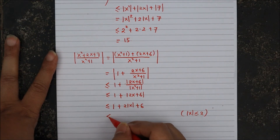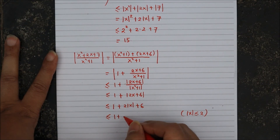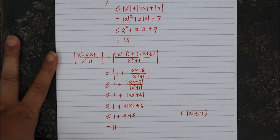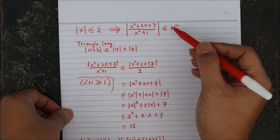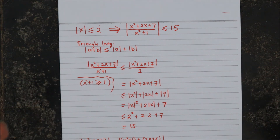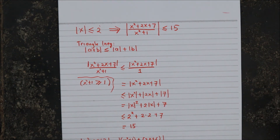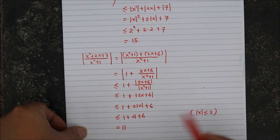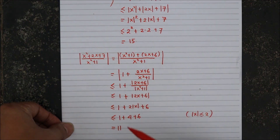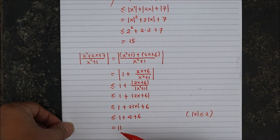So this will be less than or equal to 1 plus 2 times 2, which is 4, plus 6, which equals 11. The previous result saying this expression is less than or equal to 15 does not invalidate that the upper bound can be smaller. Indeed, we just showed that the upper bound can be made into 11 — that expression is in fact less than or equal to 11.